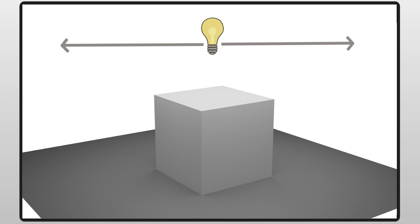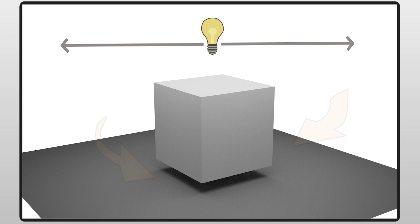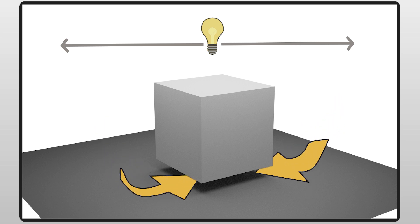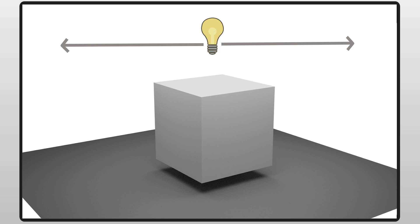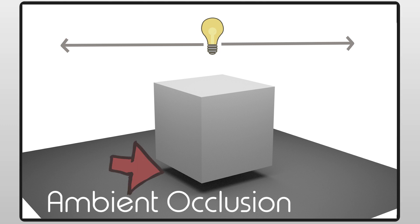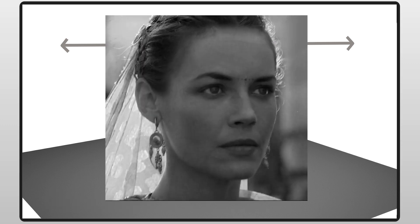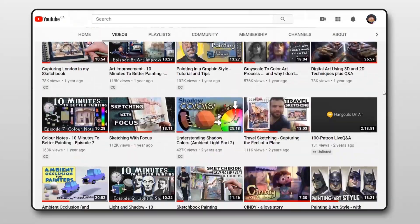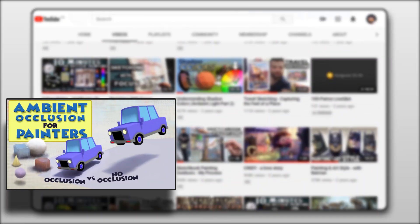The box rises above the ground just a little bit and we do get a very dark area under there — that is where the ambient light is occluded, hence the familiar term ambient occlusion. So when you're painting ambient light, it becomes very important to look for the deepest spaces and give those areas the darkest values. I have a whole video about ambient occlusion, so check that out too.